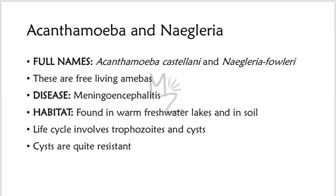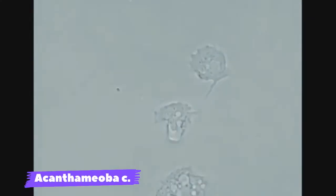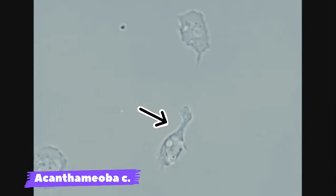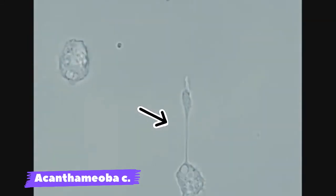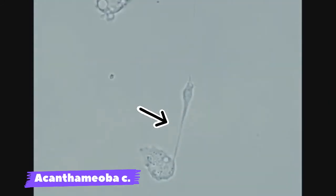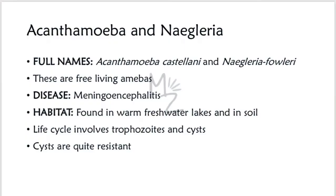Acanthamoeba and Naegleria. The full names of these organisms are Acanthamoeba castellani and Naegleria fowleri. These are free-living amoebas responsible for causing meningoencephalitis. Their habitat is fresh water, lakes, and soil. Their life cycle involves trophozoites and cysts. Cysts are cold-resistant and are not killed by chlorination.